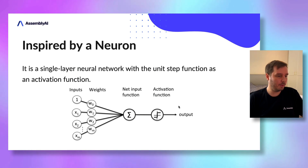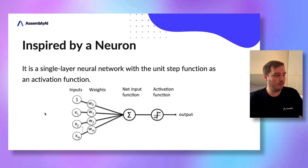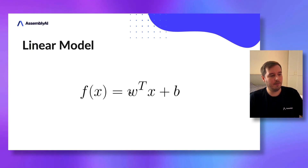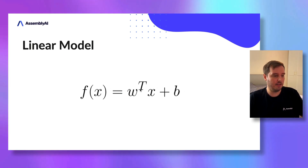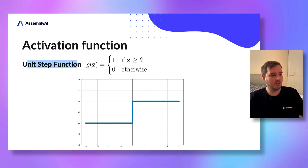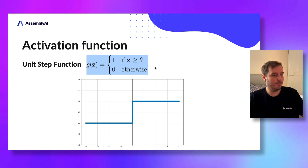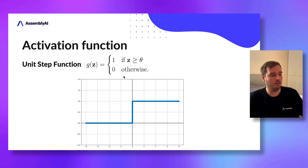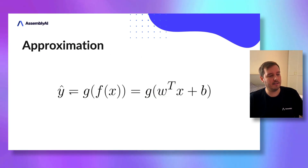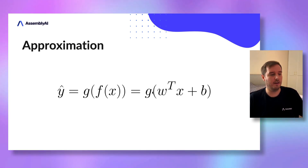Now let's put this into a mathematical model. We have the inputs times the weights — a simple linear model. We approximate f(x) with w times x plus a bias b. Then we also apply the activation function, the unit step function, which is 1 if the input reaches a certain threshold and 0 otherwise. So we approximate the class label with the linear model w times x plus b and then apply the unit step function.